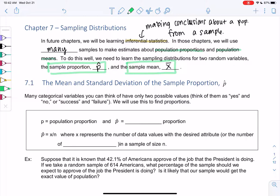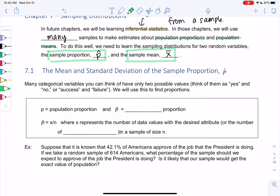Section 7.1: The Mean and Standard Deviation of Sample Proportion p-hat. Many categorical variables you can think of only have two possible values, just like binomial. That could be a yes or a no, or a success or failure, and we'll use this to find proportions. So it will feel similar to binomial. The formulas will be better, but the idea will be similar to binomial.